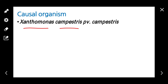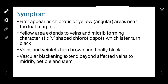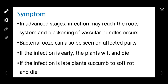Coming to symptoms: disease first appears as yellowing near the leaf margin. The yellow area extends to veins and midrib, forming V-shaped chlorotic spots, which later turn black. Veins and veinlets turn brown and finally black. Vascular blackening also extends to the midrib, petioles, and stem. In advanced stages, infection may reach the root system, and bacterial ooze comes from the infected area.